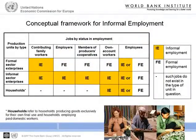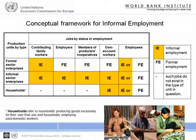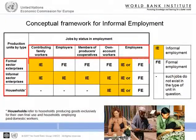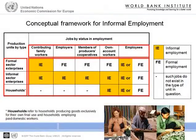To arrive at a standard definition for informal employment, a conceptual framework was developed by the ILO, International Labor Organization, in 2002. The framework shows the relationships between status and employment, informal employment, and employment in the informal sector. It disaggregates total employment according to three dimensions: type of production unit, status and employment, and formal or informal nature of employment. Jobs are classified according to status and employment, an important analytical variable which helps identify the type of job and nature of employment, thus facilitating the measurement of persons in informal employment.